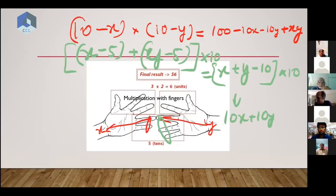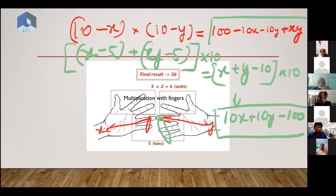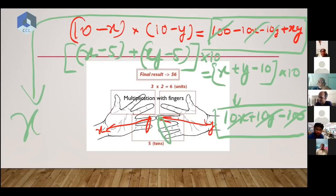Correct: x plus y minus 10 times 10, which is 10x plus 10y minus 100. Okay, now if you add this green thing to this red thing, what will you get? You can clearly see all these terms will cancel and finally you just get xy.